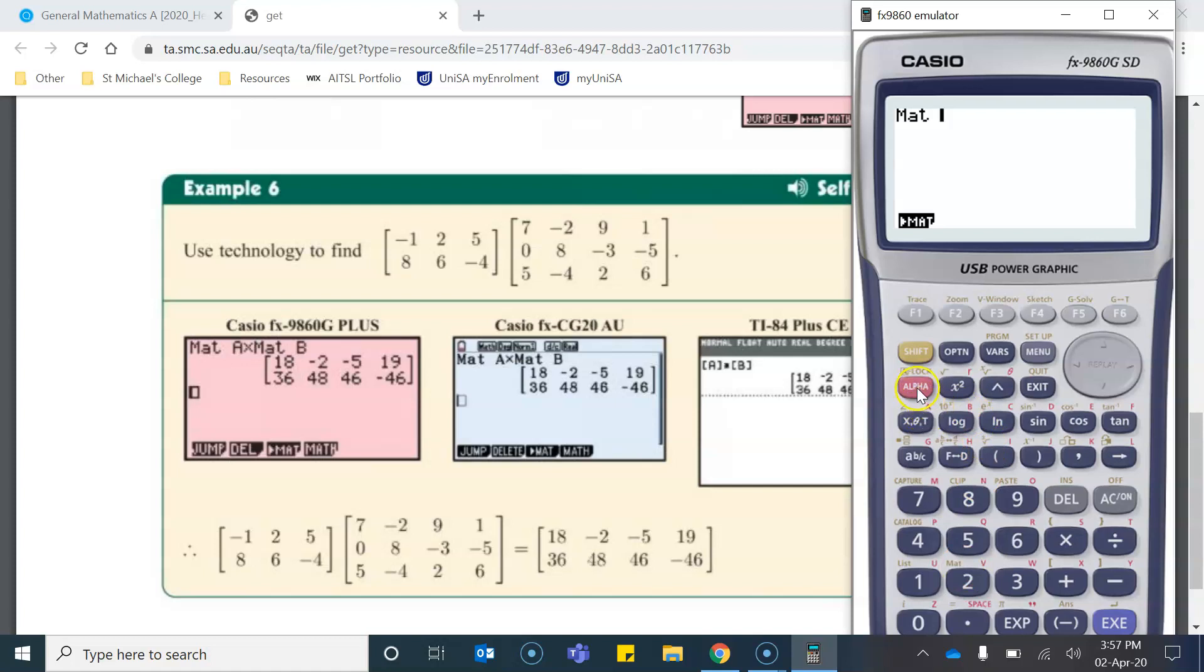You'll notice above this button, there's a little A, and it's red. So if I click alpha A, now I've got matrix A, and I want to multiply it by matrix B. Again, I need to get to the yellow. So I click shift, matrix, and alpha B.